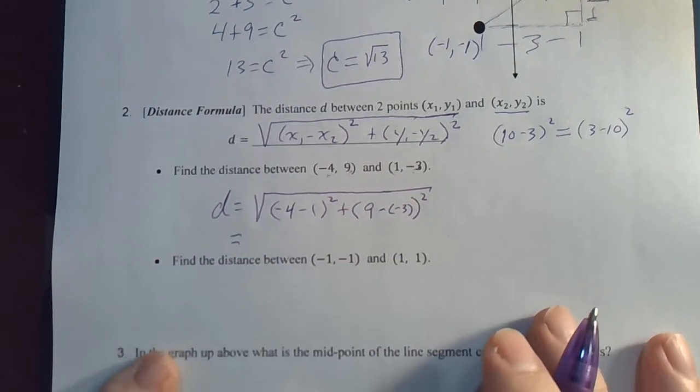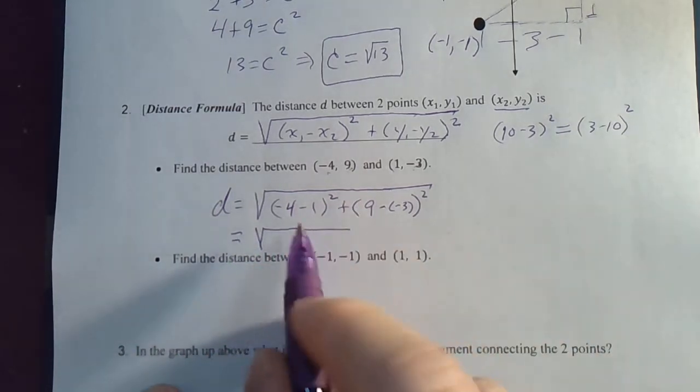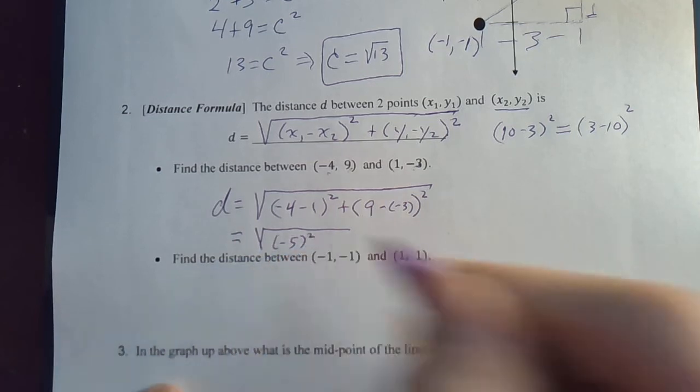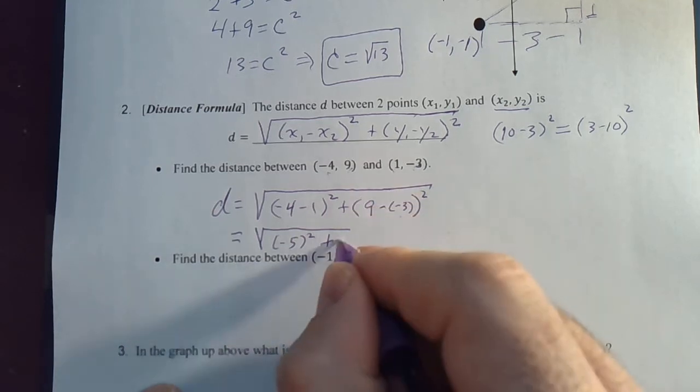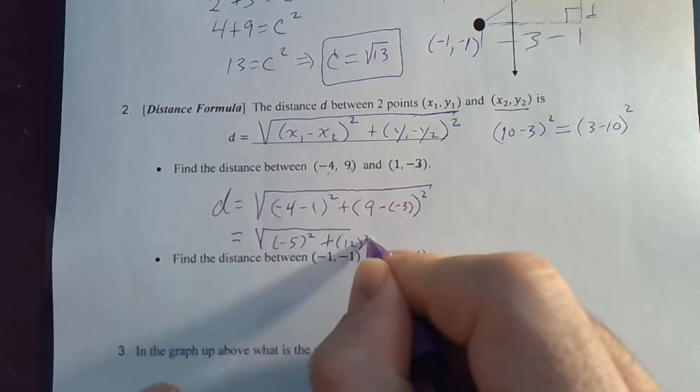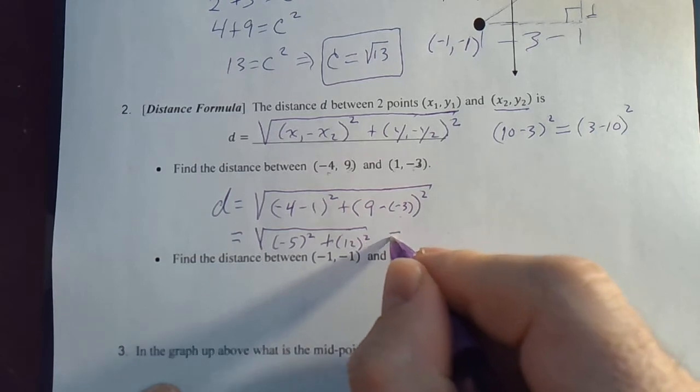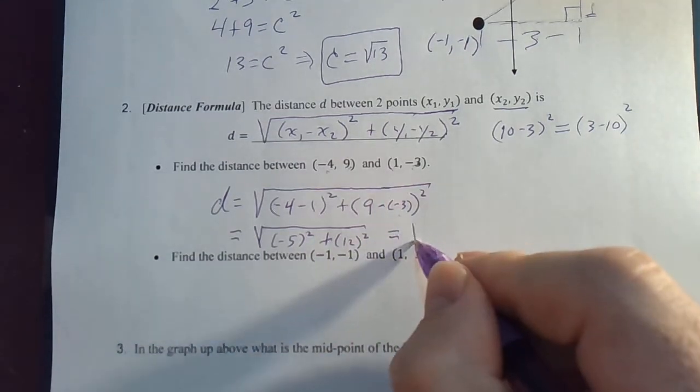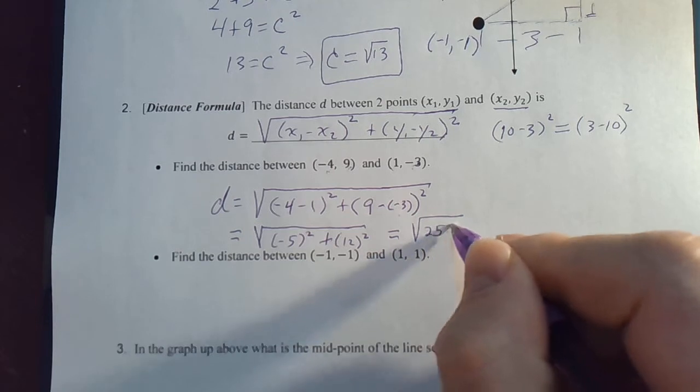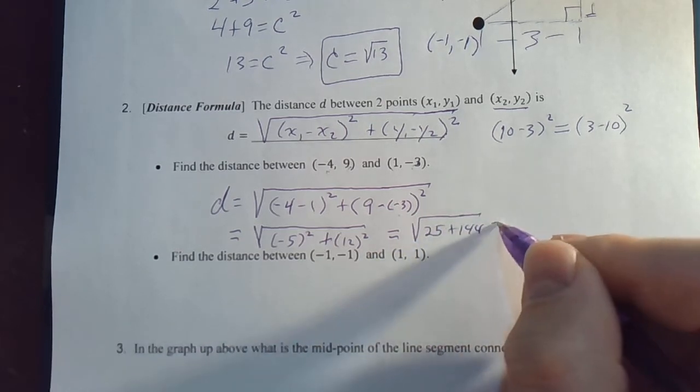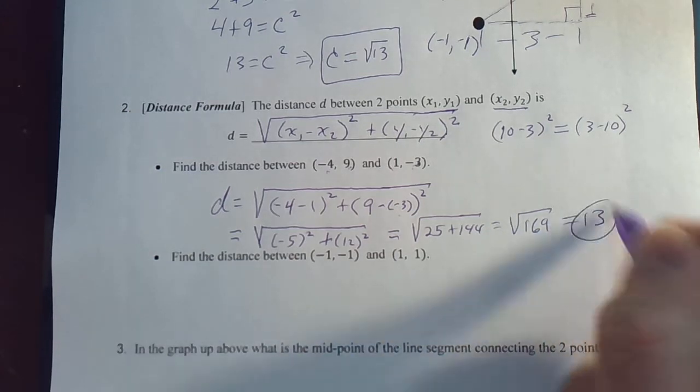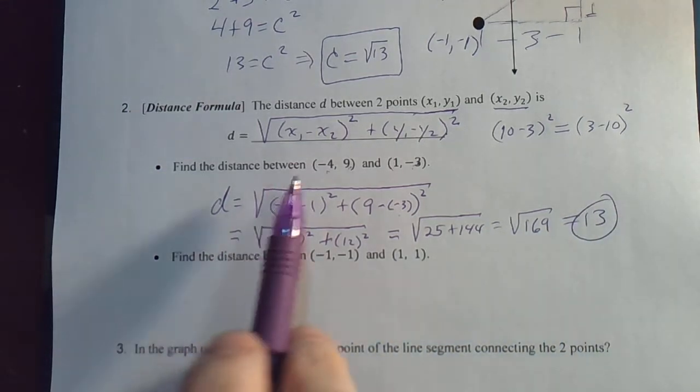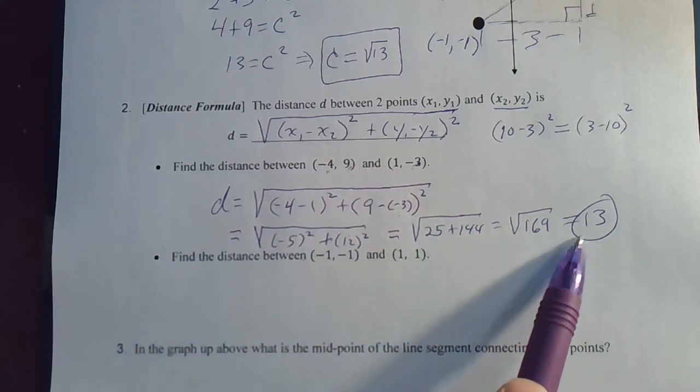Now, let's see if we can simplify that. Underneath the radical, we've got negative 4 minus 1 is negative 5 squared plus 9 minus negative 3 is 9 plus 3, which is 12 squared. So, that gives us the square root of 25 plus 144, which is the square root of 169, which is 13. So, the distance between these two points is exactly 13.